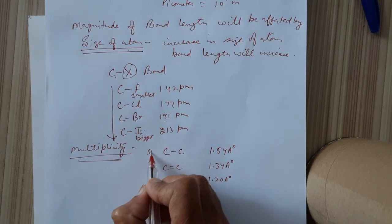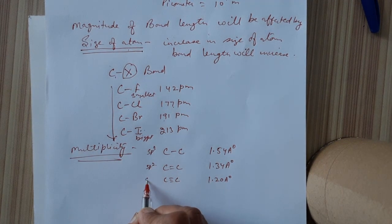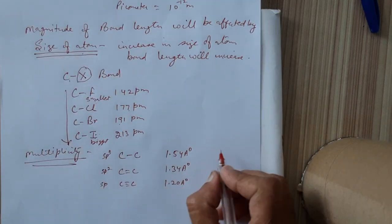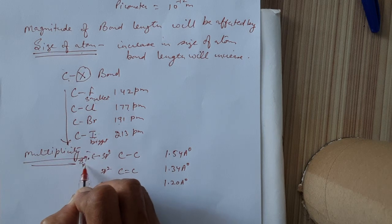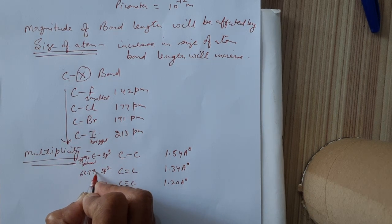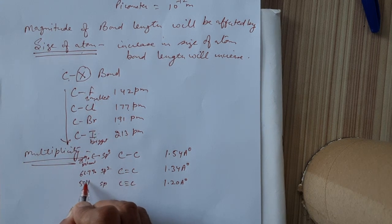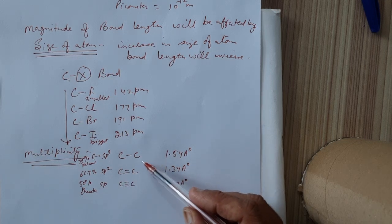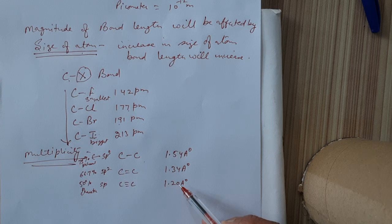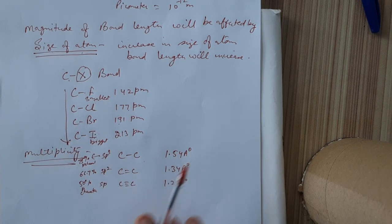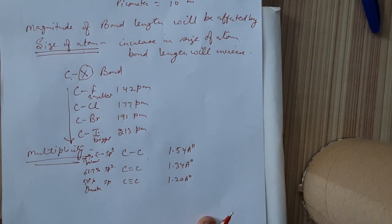We can also explain this in terms of hybridization. For SP3 hybridization, the P character is 75%. For SP2, it is 66.7%. And for SP, it is just 50% P character. With decreasing P character, bond length also decreases. This was all about bond length.